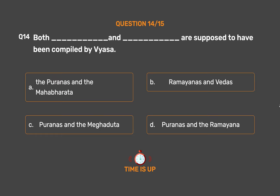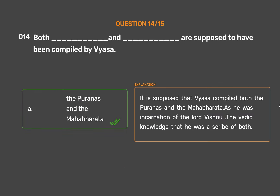The correct answer is Option A: The Puranas and the Mahabharata. It is supposed that Vyasa compiled both the Puranas and the Mahabharata, as he was considered an incarnation of Lord Vishnu and a scribe of both.